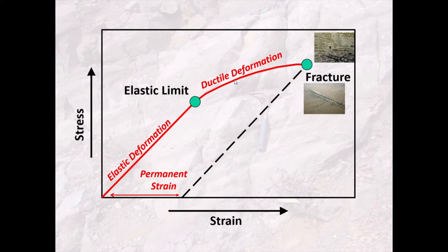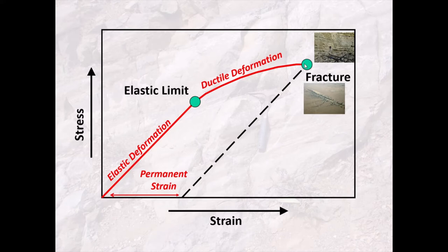If we keep applying stress, there's a point where the rock cannot accommodate it by undergoing any more ductile deformation — it can't just bend or buckle. Instead, its only option to accommodate further stress is to undergo fracture, to snap, to break. It's at this regime, where we apply stress so much that we overcome the competence of the rock, that we start forming faults.